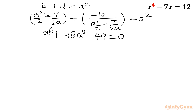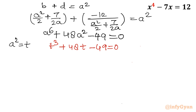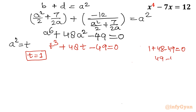If you add all coefficients: 1 + 48 - 49 = 0, so a = 1 is an obvious solution. I will substitute a² = t, converting the hexic into a cubic: t³ + 48t - 49 = 0. Then t = 1 is the obvious solution — putting t = 1 gives 1 + 48 - 49 = 0. ✓